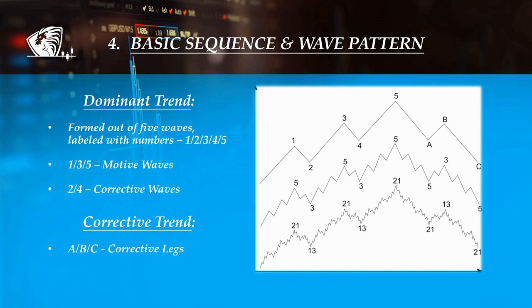Three of these swings, which are 1, 3 and 5, actually affect the overall direction in favor of the dominant trend. These swings are known as motive waves, also called impulses.